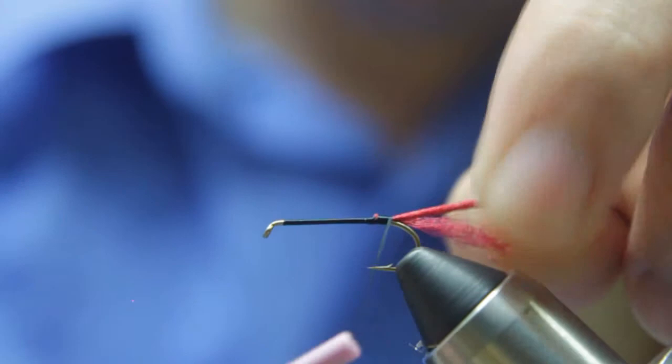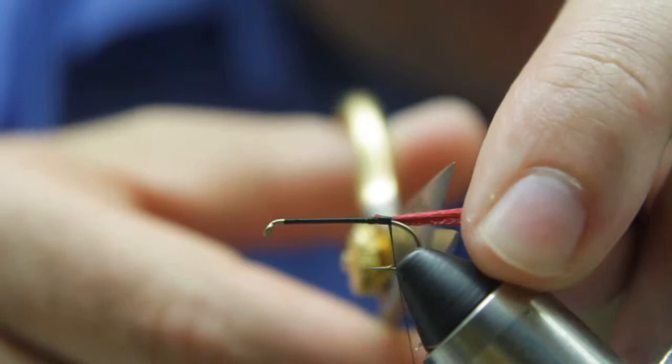And once I'm there, I can trim it up a little bit. You don't need a super long tail, probably about half to a third of the hook shank.